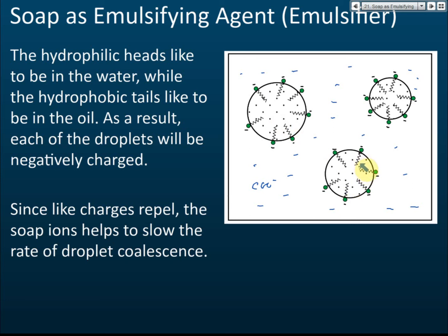That's why the oil and water remain as an emulsion even for a few days. The soap molecule's hydrophobic parts dissolve in oil, the hydrophilic parts remain in water, and the hydrophilic parts carry negative charges that repel each other, preventing the oil droplets from joining together to form an oil layer. That is how soap acts as an emulsifying agent.